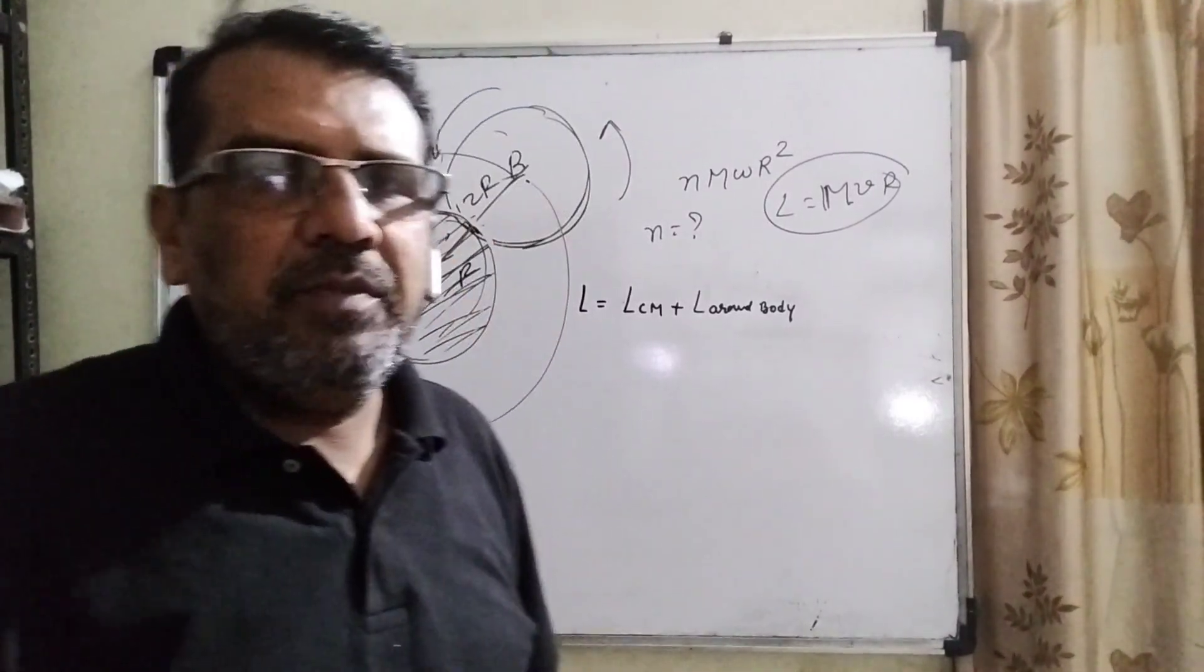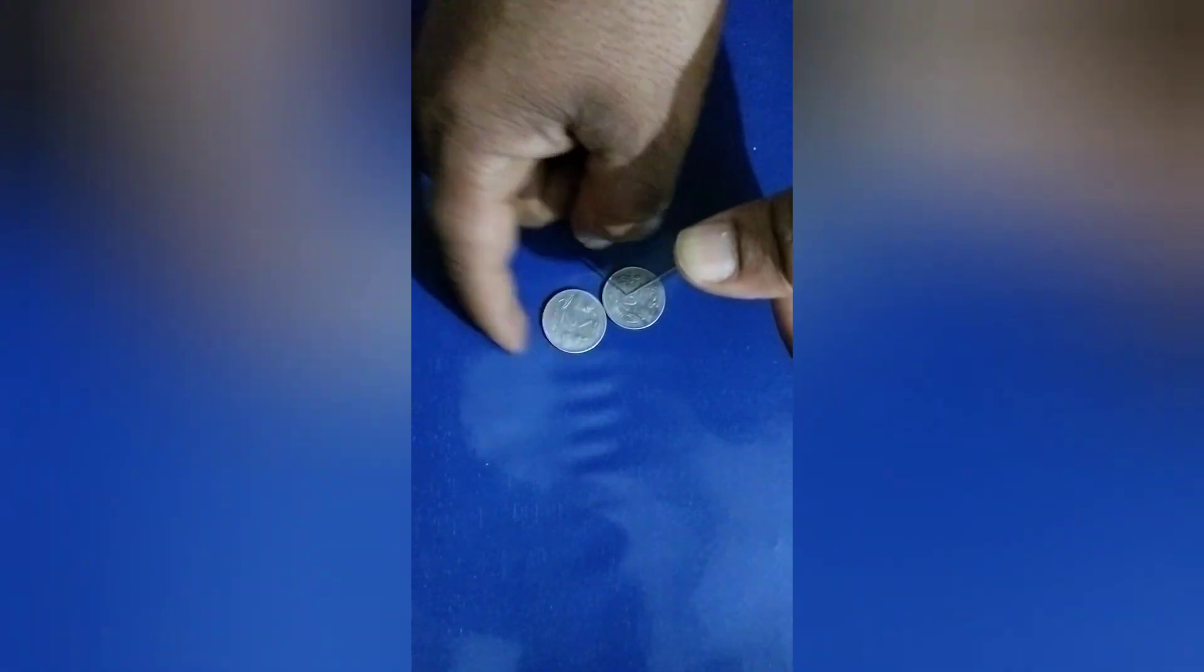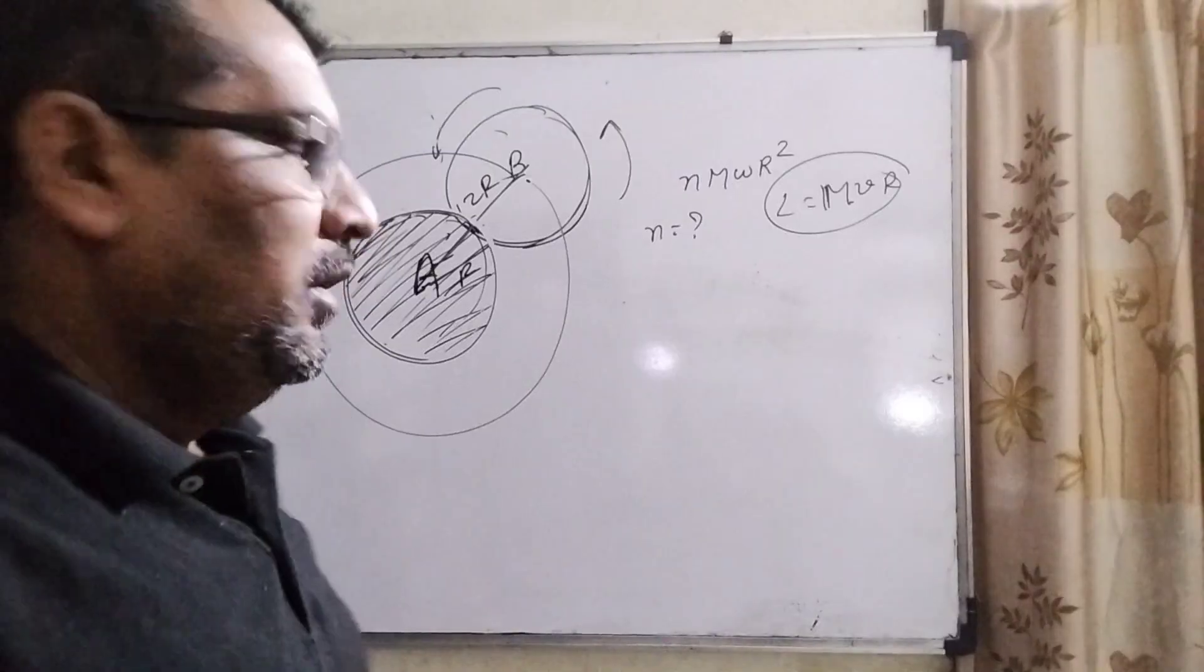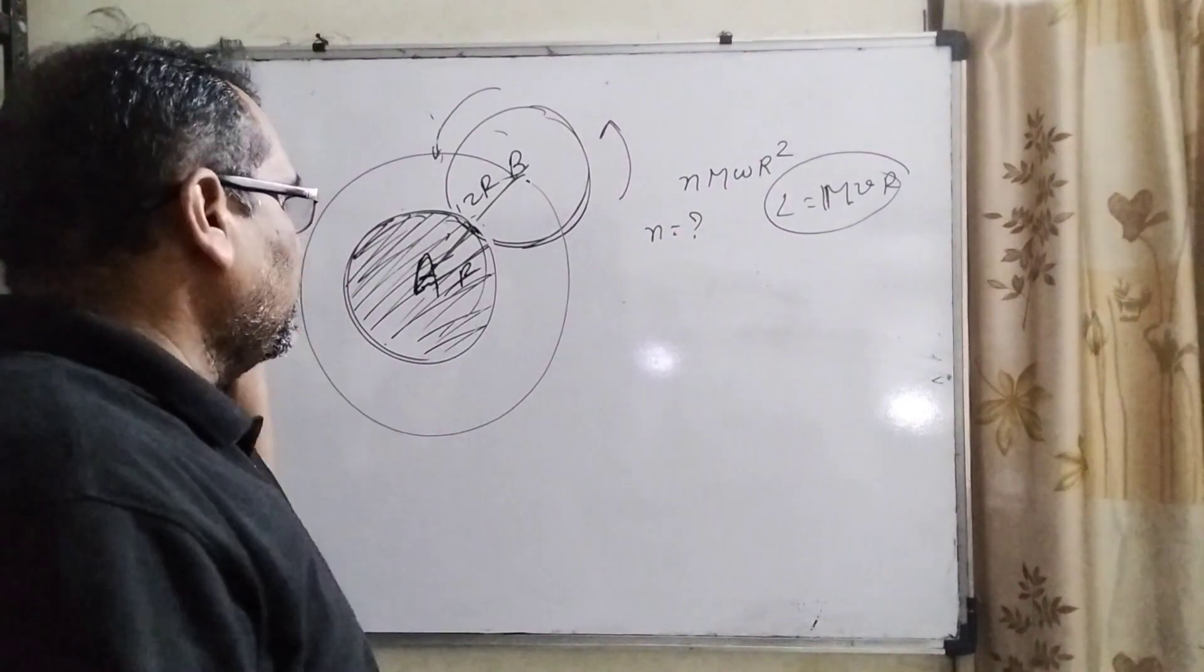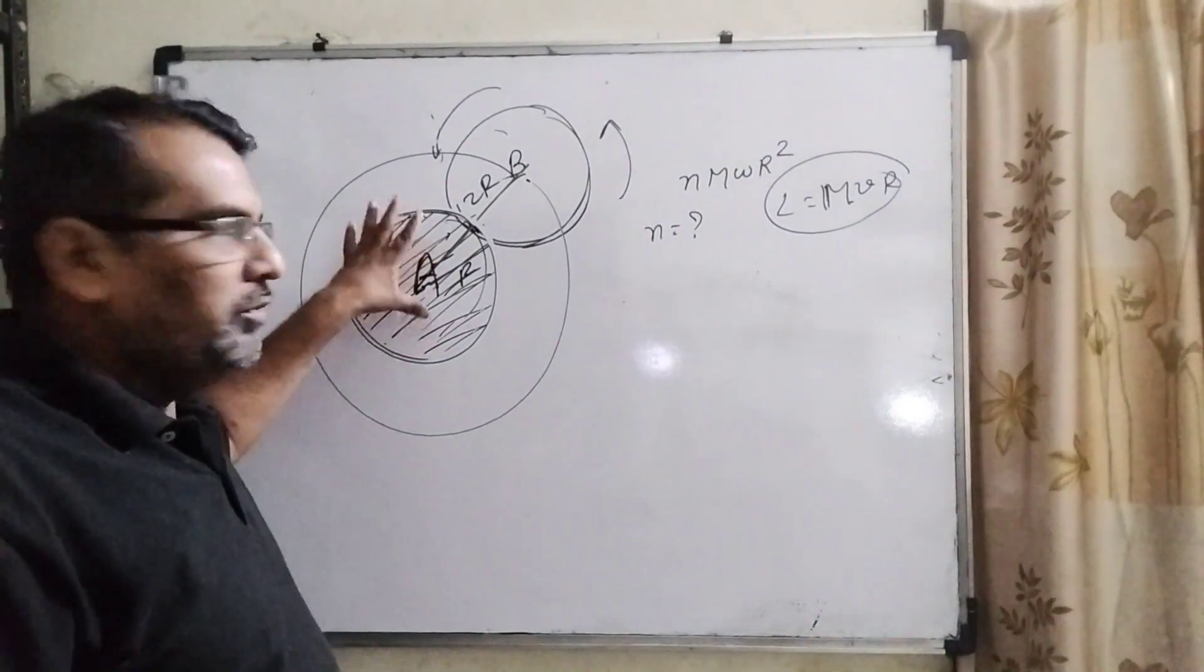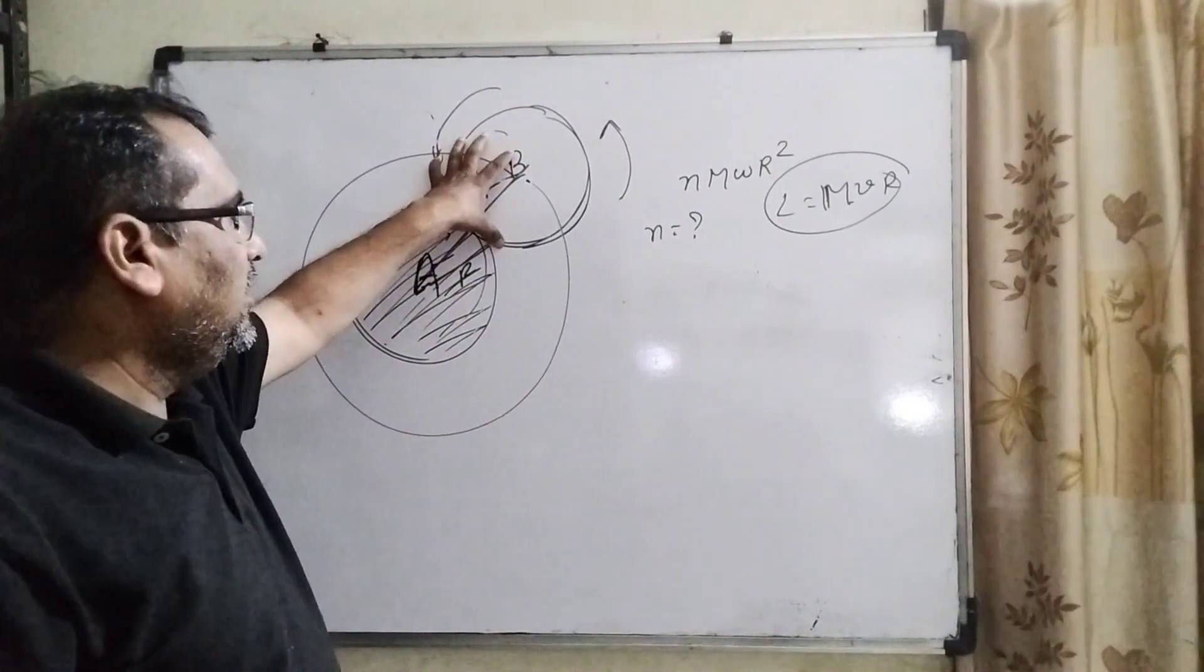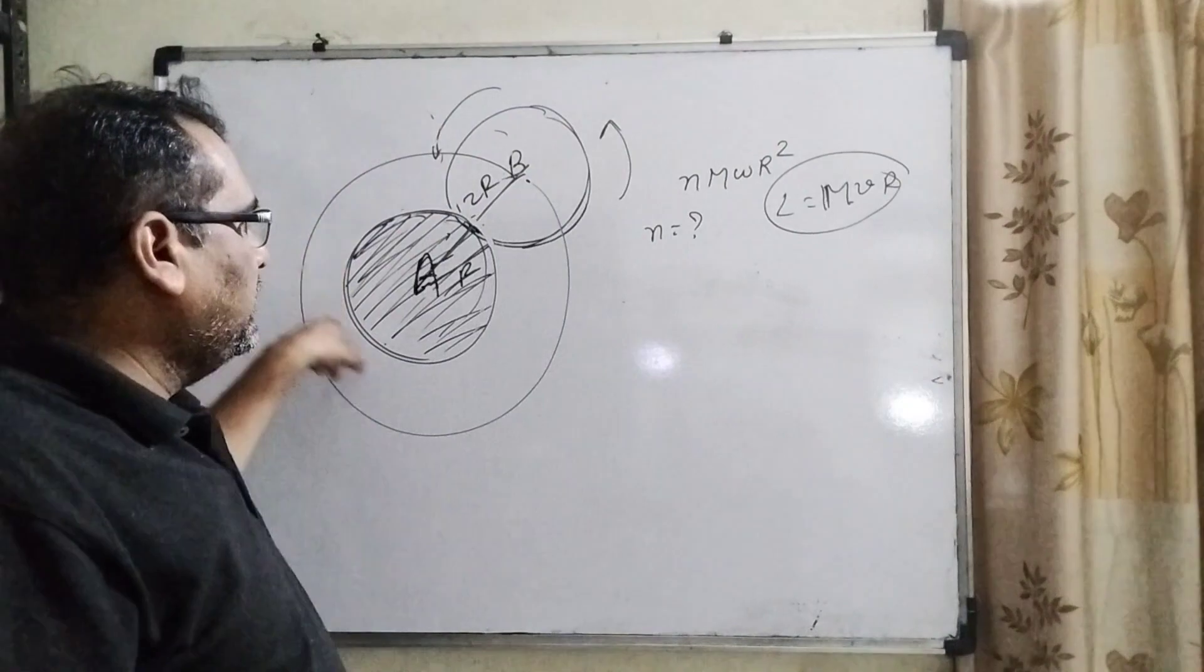Now you can understand by pausing this video. Let's see what the question says. Here a disk is fixed with glue to the table, and another disk, identical disk B, is moving around disk A.